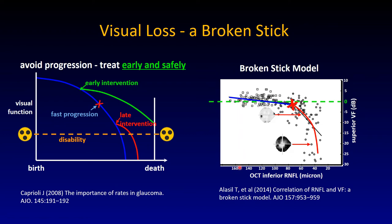An interesting practical example: you can lose quite a bit of retinal nerve fiber layer without terrible things happening, but at an inflection point some patients experience a steep downward slope. At around minus 5 dB there is a little nasal step, then suddenly with just a few micron change, a patient can be at minus 20 dB — a fairly constricted, very disabling visual field. You have to act aggressively and not too late.